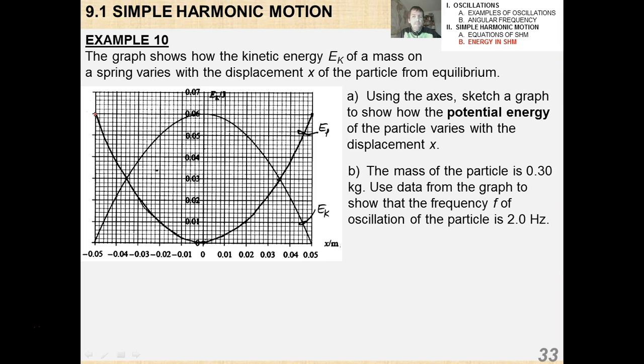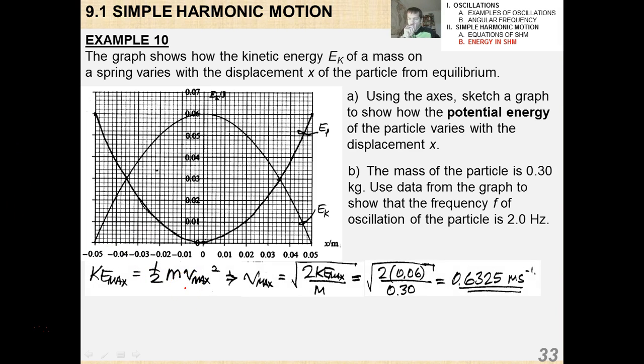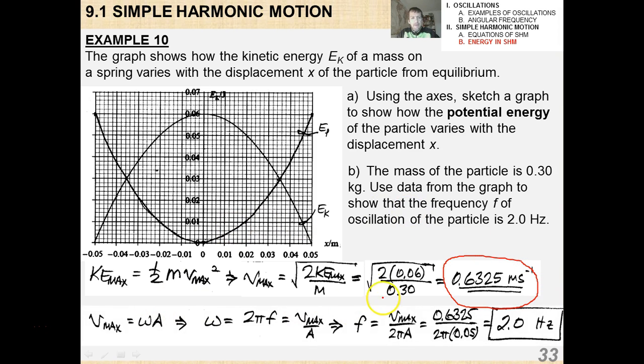In part B, it's a little more quantitative. The mass of the particle is 300 grams. Use data from the graph to show that the frequency of oscillation is 2 hertz. Now in this case, you find that V max, you can get this value of V max, and again this is not the only way to do the problem. There's probably other ways to do it. And then what you would do is you could, this is one way to do it, you could solve for omega and then extract F out of that omega to get that it's 2 hertz. And that's how you do these kinds of problems.